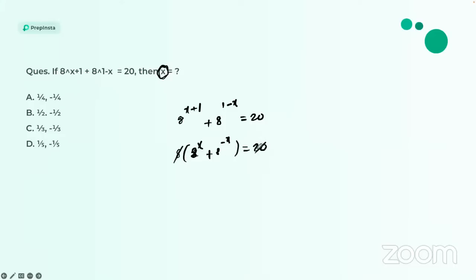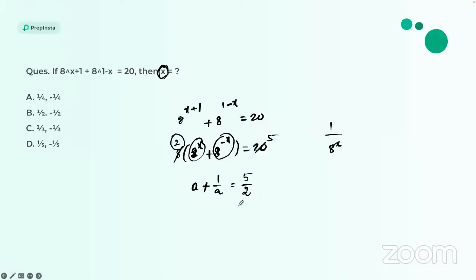Let a = 8^x, so 8^(−x) = 1/a. Then a + 1/a = 5/2. Rather than solving as a quadratic, notice that 5/2 = 2 + 1/2, so a = 2. Always try to find a simplified value instead of using the quadratic equation.